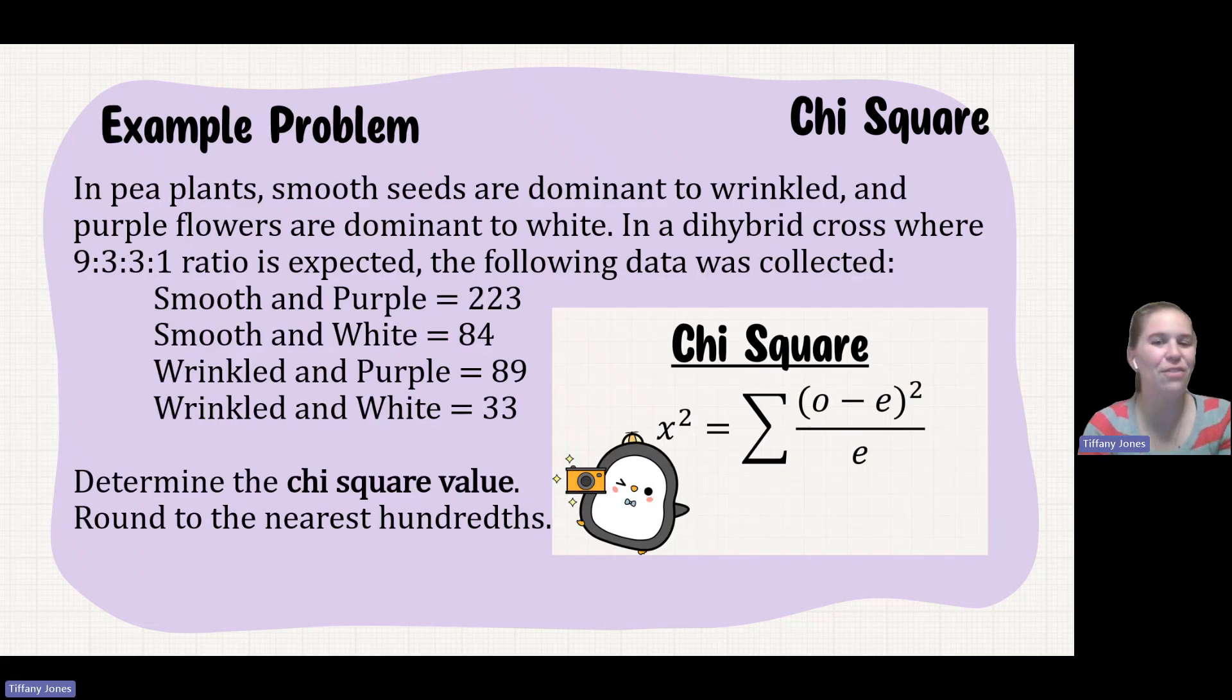So go ahead and pause the video and see if you can do this question. You're not going to have to do a Punnett square on this one, but just see if you can do this question. So we have a pea plant. Smooth is dominant to wrinkled, purple is dominant to white. And the dihybrid cross would be a 9 to 3 to 3 to 1 ratio. So they've already given us our expected ratio. The following data is collected.